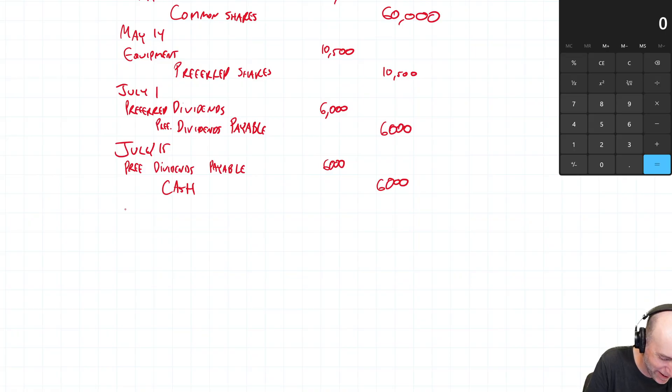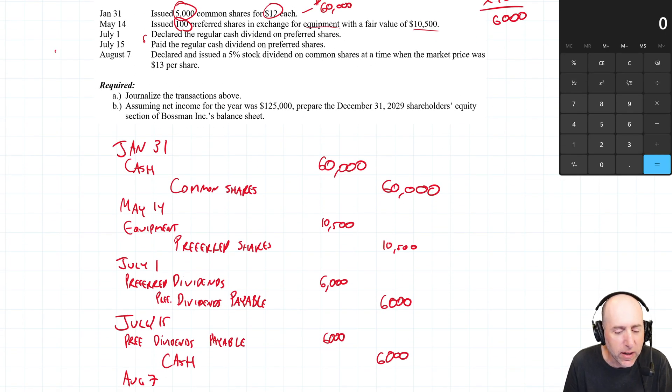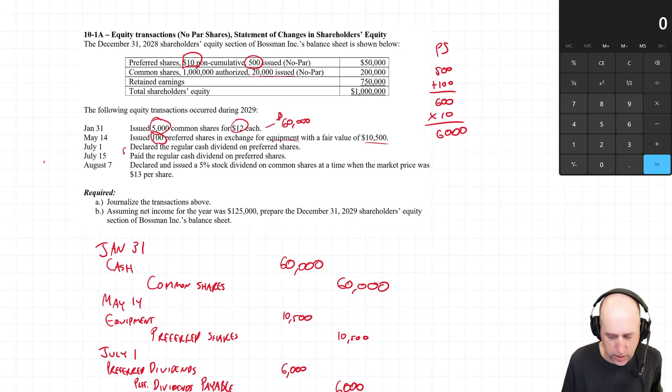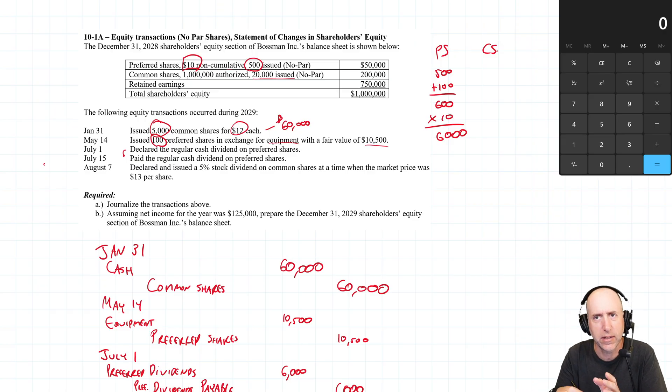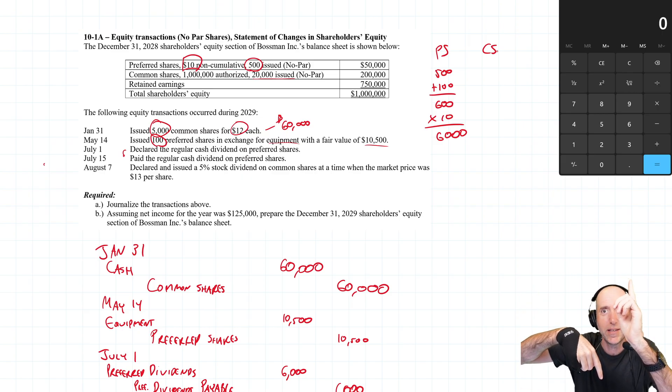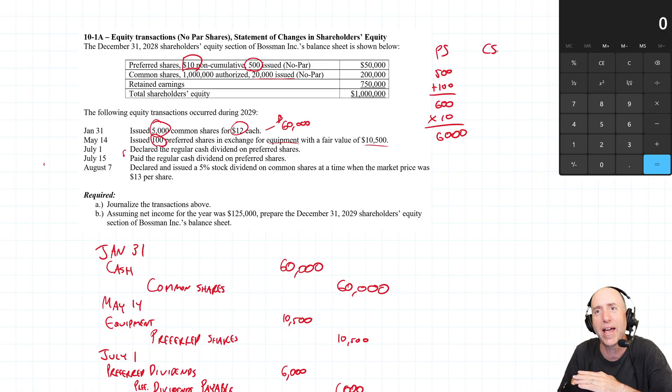August the 7th. What happens on August the 7th? We declared and issued a 5% stock dividend on the common shares. At a time when the market price was $13 per share. Okay, a stock dividend is, we pay our shareholders a dividend, but we don't give them cash. We give them shares in our company. And it's a funny transaction if you think about it. Because when you pay a dividend, you reduce your retained earnings. Like, dividends get paid out of retained earnings. This thing of the statement of retained earnings, beginning retained earnings, plus net income, minus dividends. Dividends come out of your shareholders' equity. So, our shareholders' equity goes up, because we got a bunch of new shares. But it goes down by the exact same amount, because we paid the dividend. So, it's a dividend. So, it reduces our retained earnings.